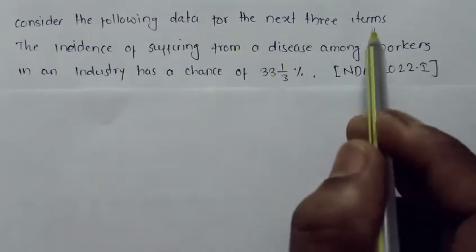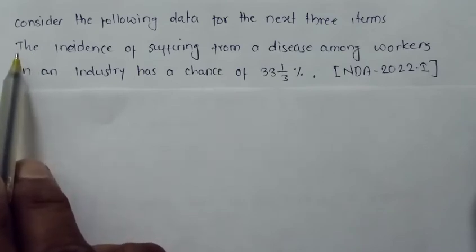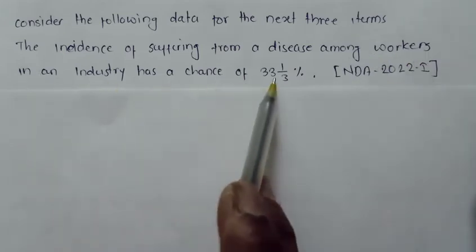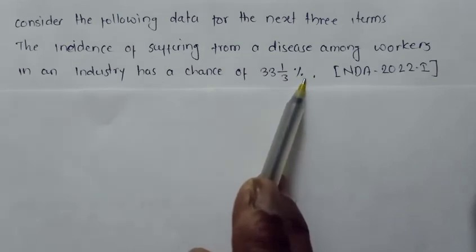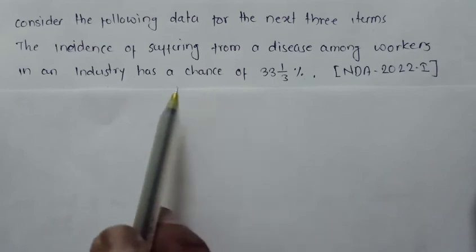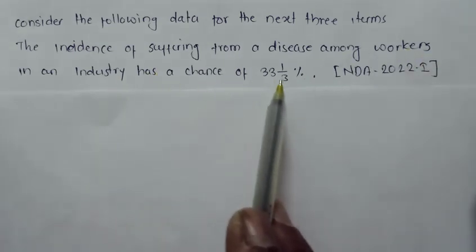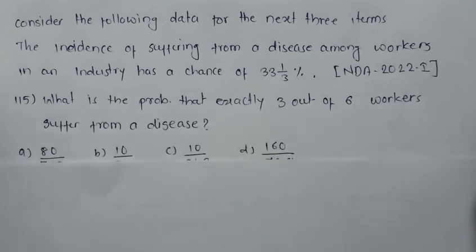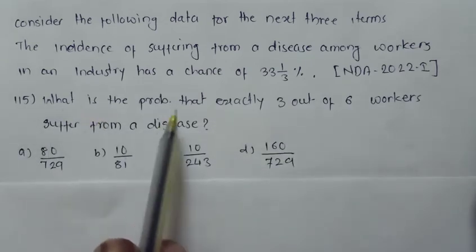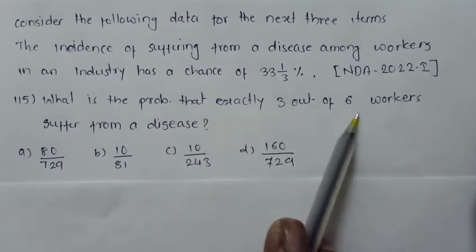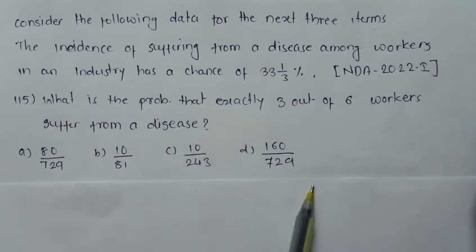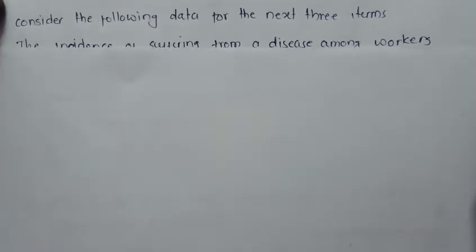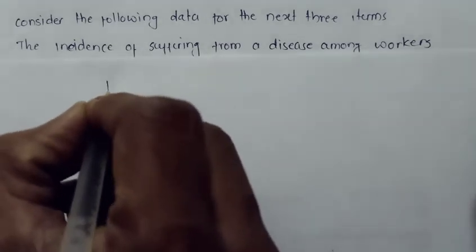Consider the following data for the next three items. The data is the incidence of suffering from a disease among workers in an industry. A worker has a chance of 33⅓ percent of suffering from a disease. Based on this data, the first question is: what is the probability that exactly three out of six workers suffer from a disease?